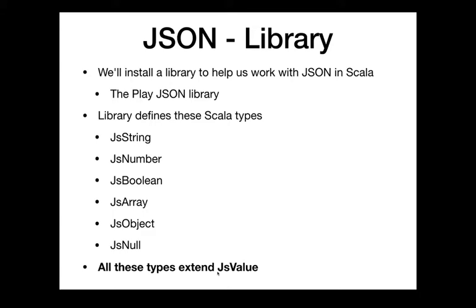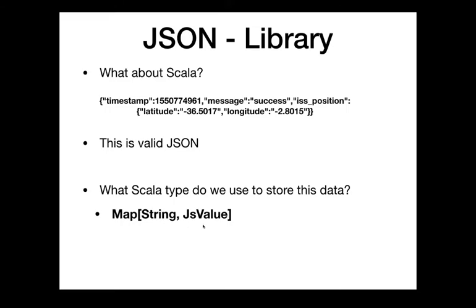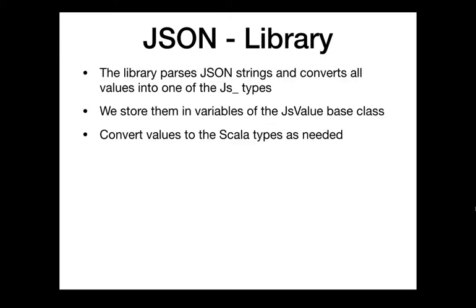The library builds this inheritance tree: JSValue extended by these six subtypes. Now the answer is clear — we use a Map of String to JSValue. We can leverage the polymorphism of the library. JSValue has all the functionality any of these six values need, and we use its methods to parse and handle our data appropriately.